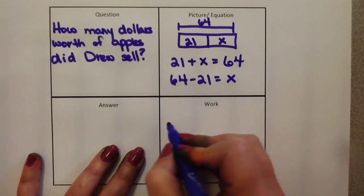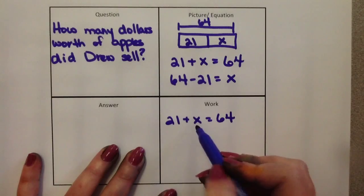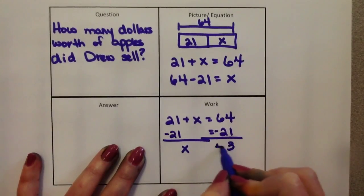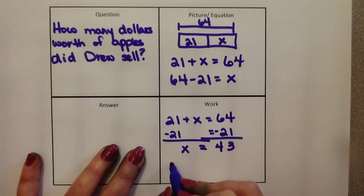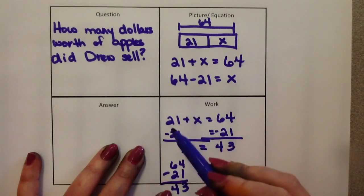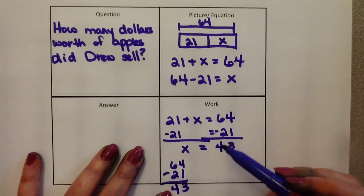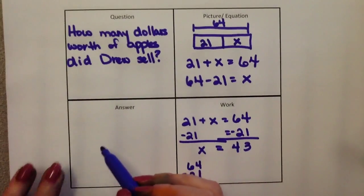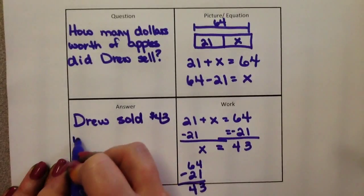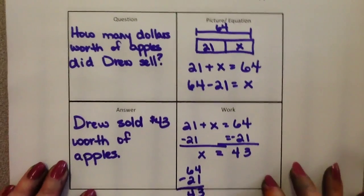We come down into this box and do the work. Being the teacher, I like to review what we did yesterday. We want the variable by itself, so we subtract 21 from both sides — and x equals 43. Now could you also do 64 minus 21 and get the same answer? Absolutely. I like using the algebraic method because in 7th, 8th, 9th, 10th grade they're going to need to solve these and they'll be much harder — so practicing now is like riding a bike with training wheels. Then over here we write the answer: Drew sold $43 worth of apples. And that's how the graphic organizer works for that problem.